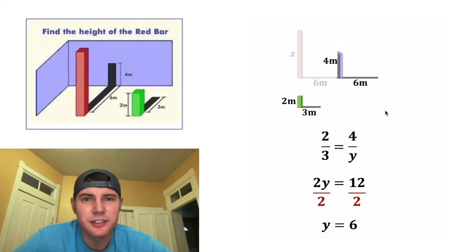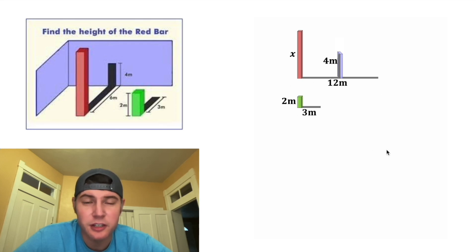So we can update this Y to be six meters. We know from here to here, the shadow is six meters. And then from here to here, it's six meters. The whole thing is going to be 12 meters.